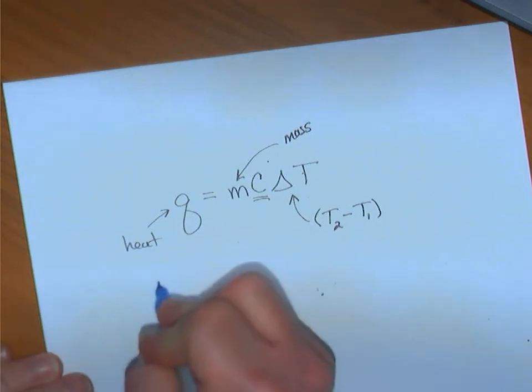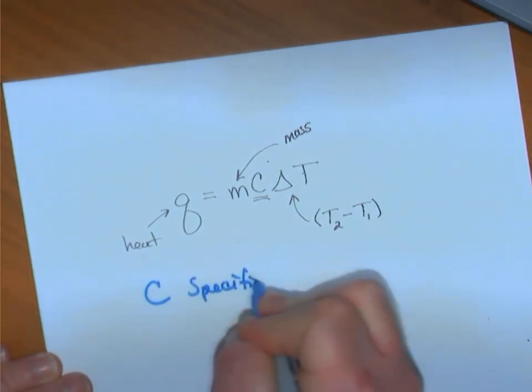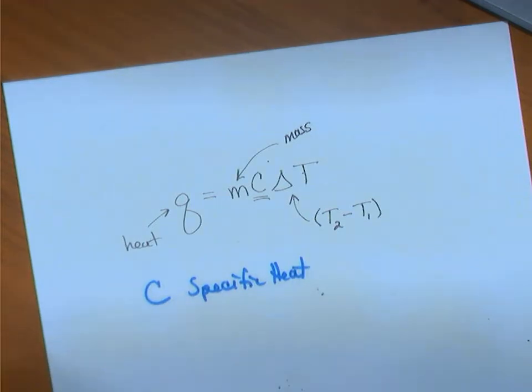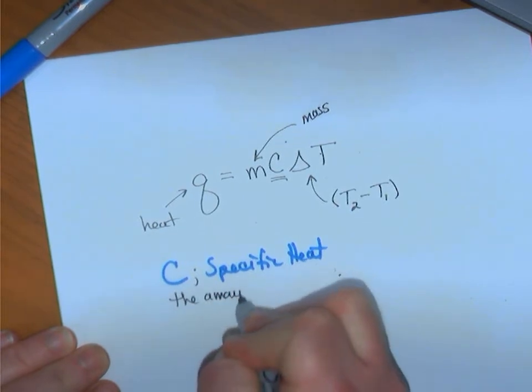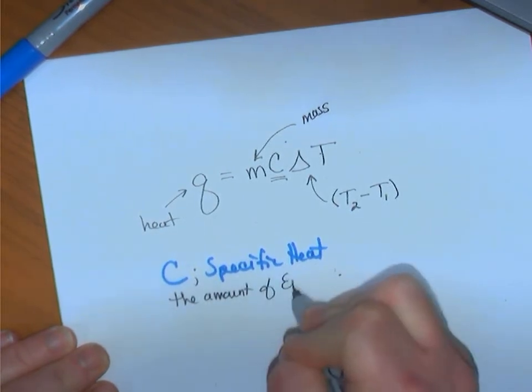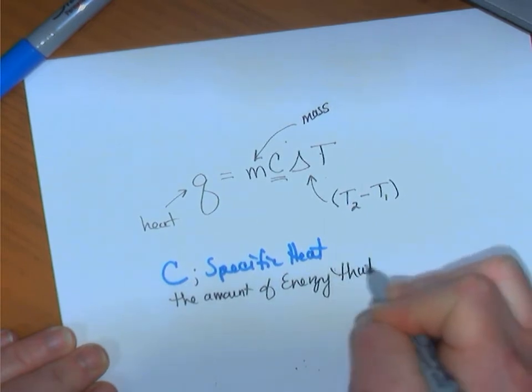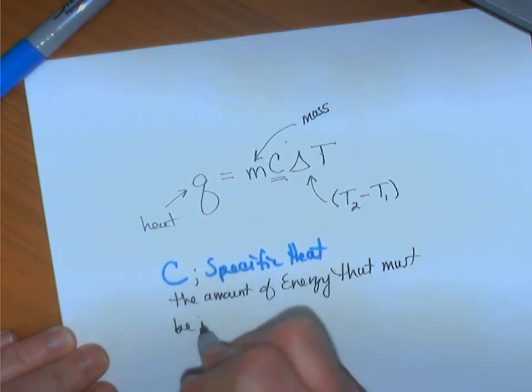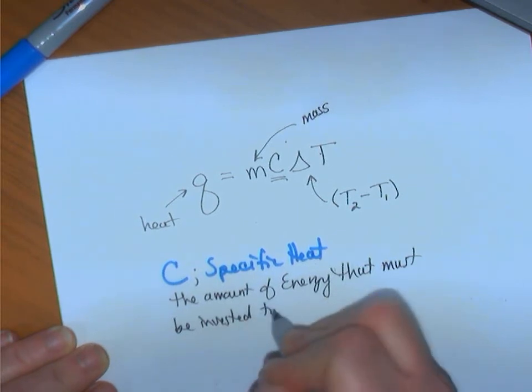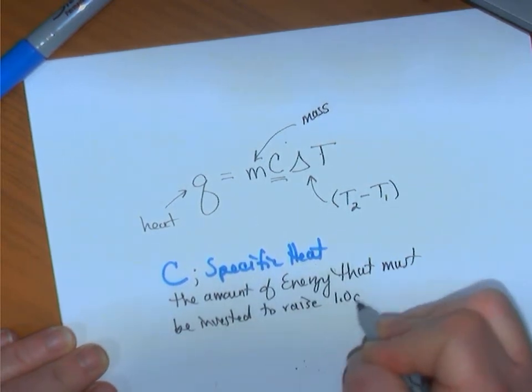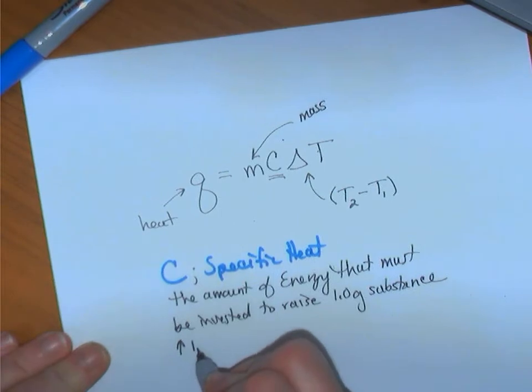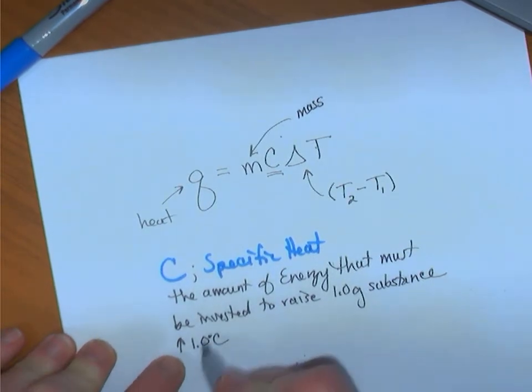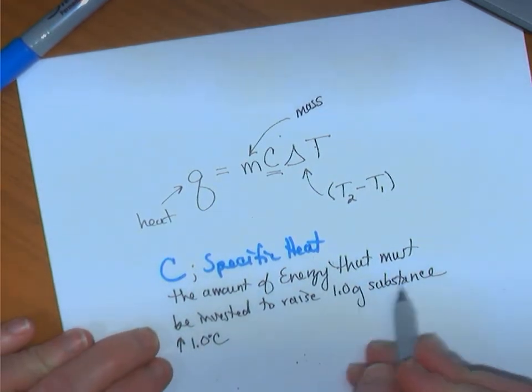C is called specific heat. It is the amount of energy that must be invested to raise one gram of substance an increase of one degree Celsius. To raise it. So to increase its temperature one degree. The amount of energy that must be invested to raise one gram of substance one degree Celsius.